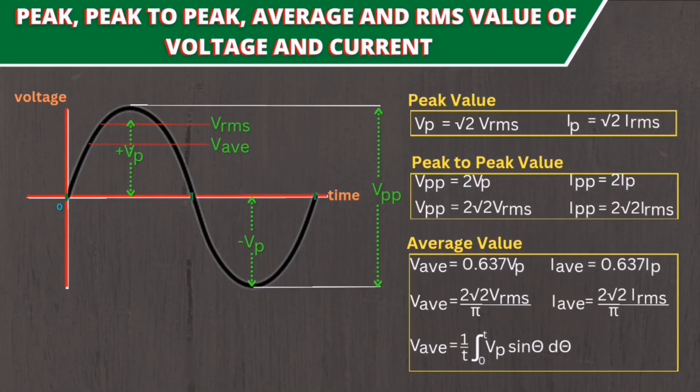Hi guys, for this video we will talk about peak value of AC voltage, peak-to-peak value, average value, and also the RMS value. In my last video I already discussed the difference between AC and DC. Now I will discuss the characteristics of an AC waveform.